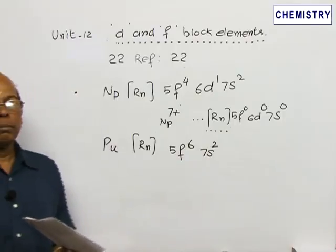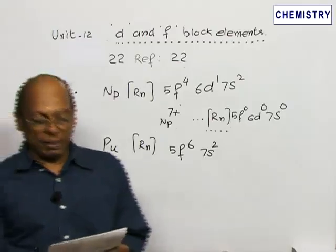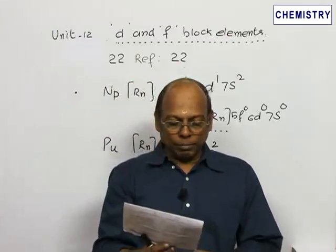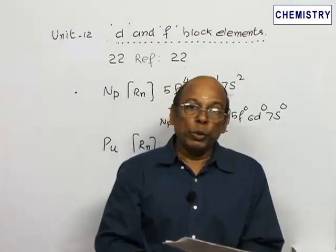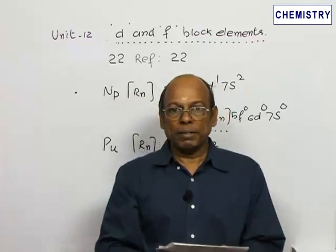Even then it shows +7. Both neptunium and plutonium show +7 oxidation state. Coming to the other options: americium and uranium are stable in +6 oxidation state. For example, uranium shows UF6, uranium hexafluoride. They do not show +7.